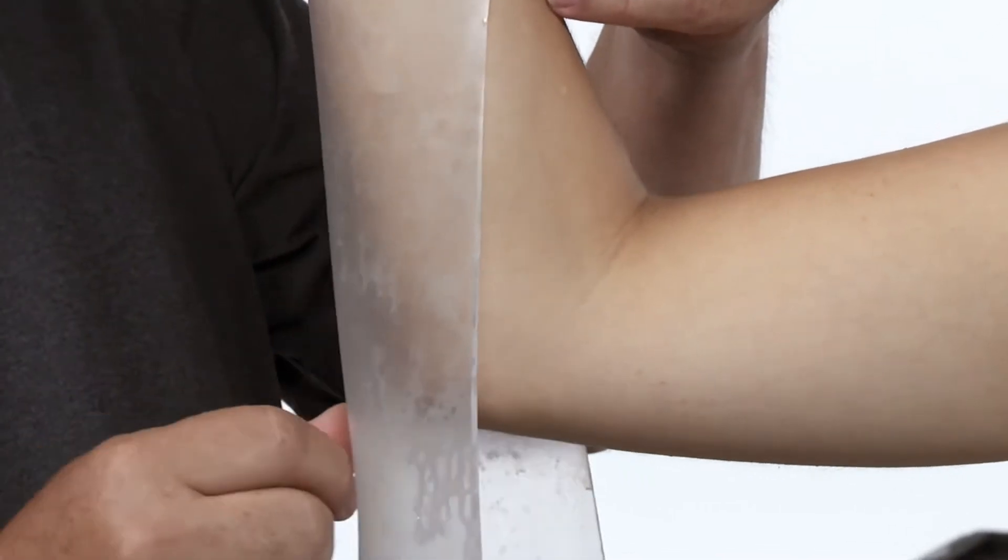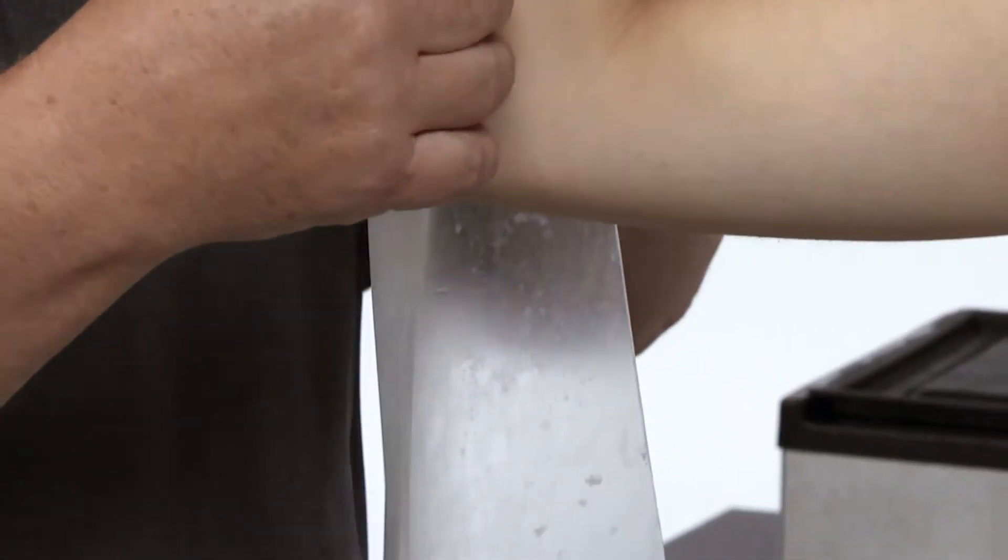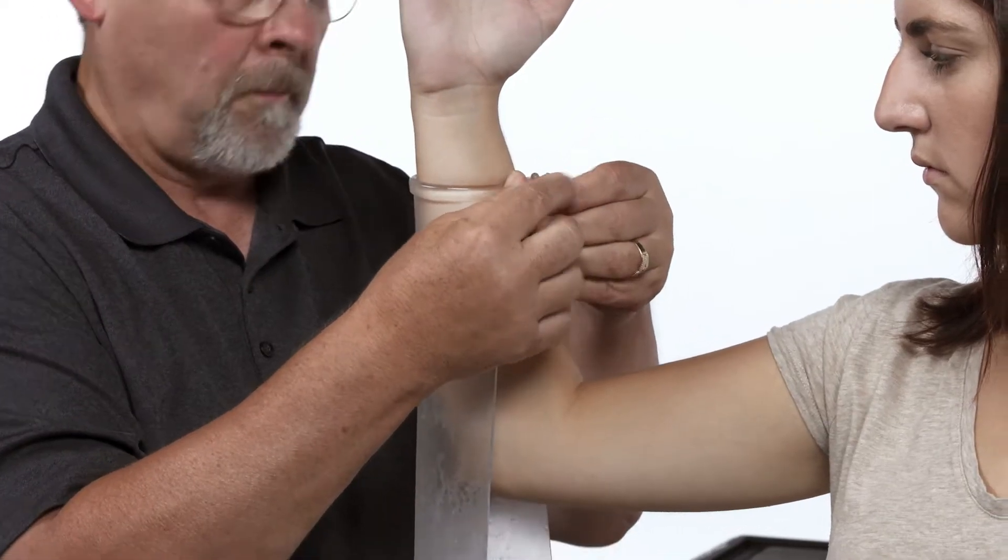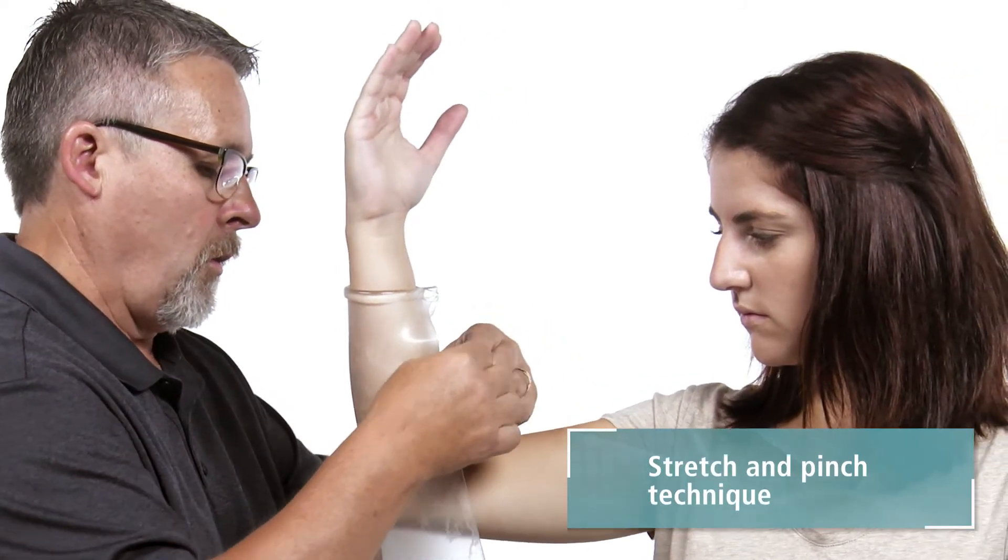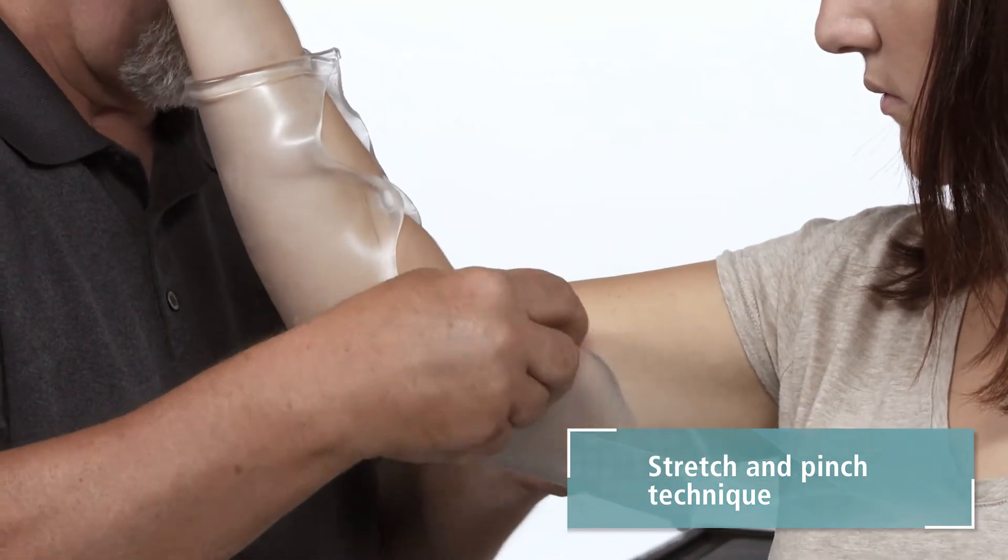The material is heated and clear so you can place the grease pencil mark over the patient's olecranon. With the mark lined up with the olecranon, use the stretch and pinch technique to stick the borders together.